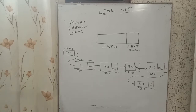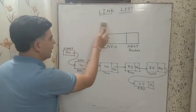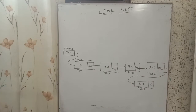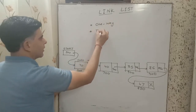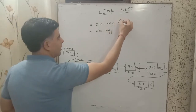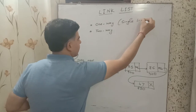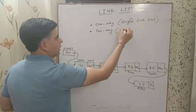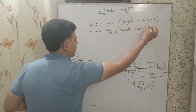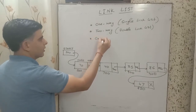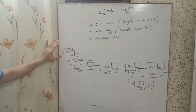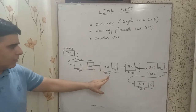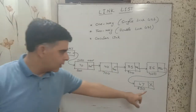There are different types of linked lists. The first type is a one-way linked list, also called a single linked list. In a one-way linked list, start contains the address of the first node, each node points to the next, and the last node's next part contains a null pointer.